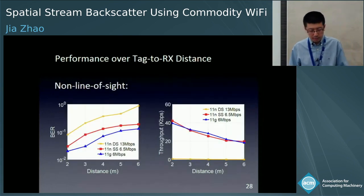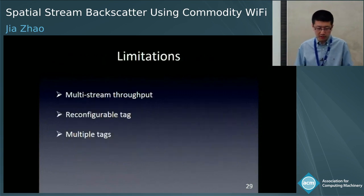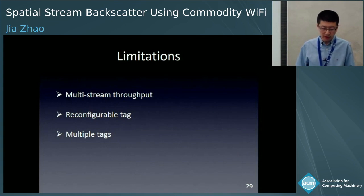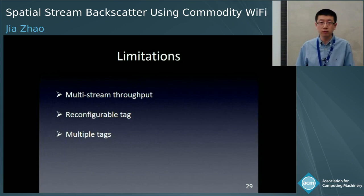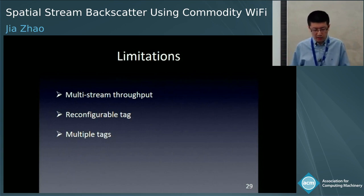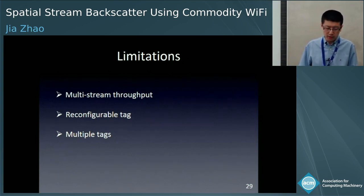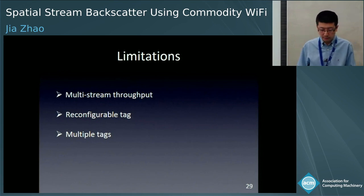In the non-line-of-sight experiments, the communication range is limited to 6 meters, and increasing the distance degrades the performance in BER and throughput. There are also limitations in the current tag implementation: multi-stream throughput is very limited compared to single-stream throughput, but it is possible to improve throughput by using multiple channels for the backscatter signal. Another concern is the power consumption of the FPGA; the tag modulation circuit may be replaced with analog components or low-power FPGAs. We also need a MAC protocol to coordinate multiple tag communications.